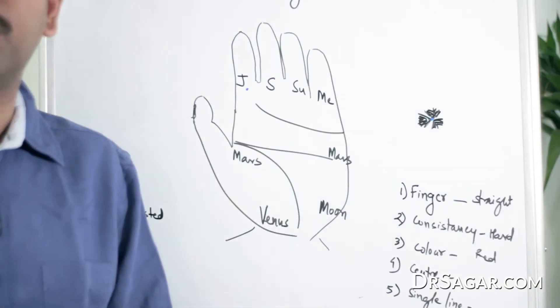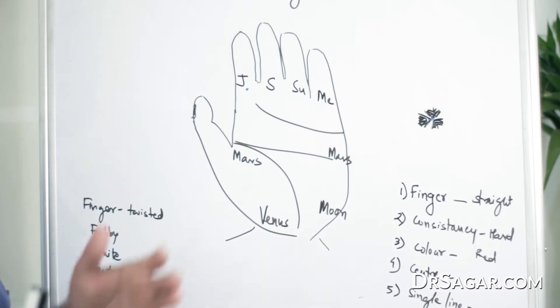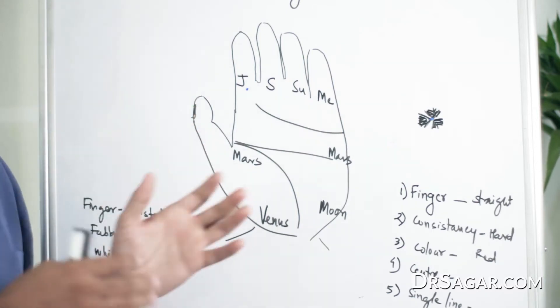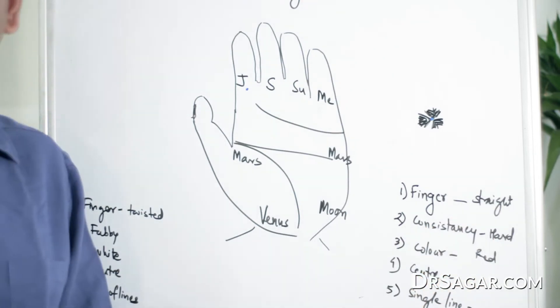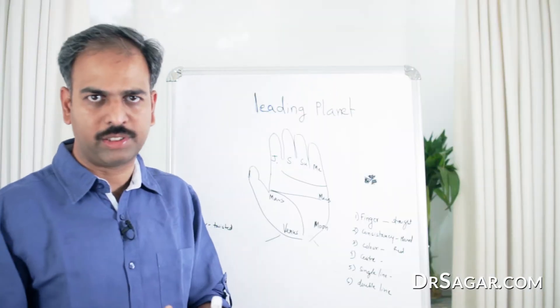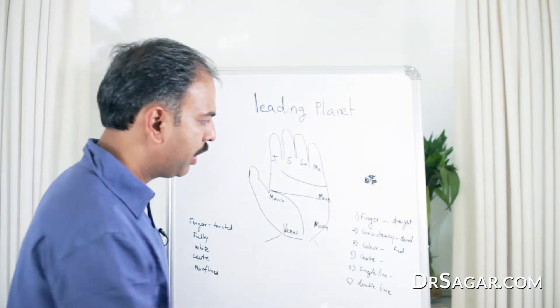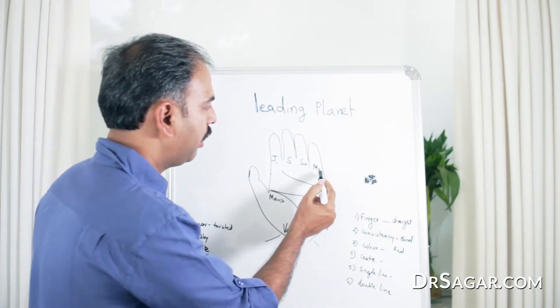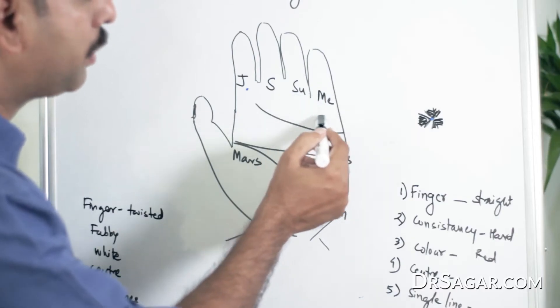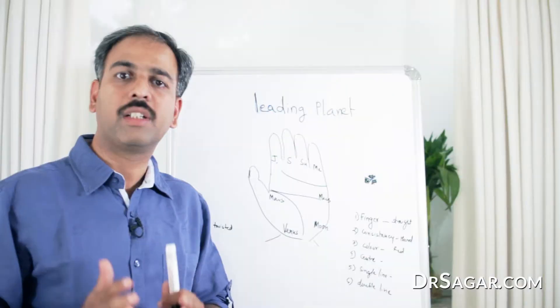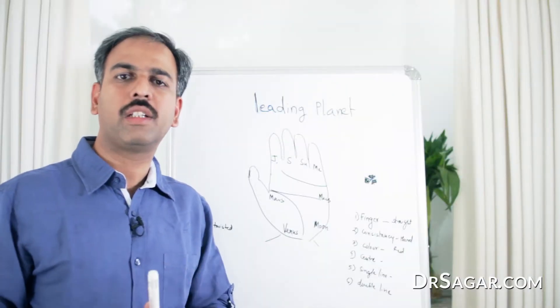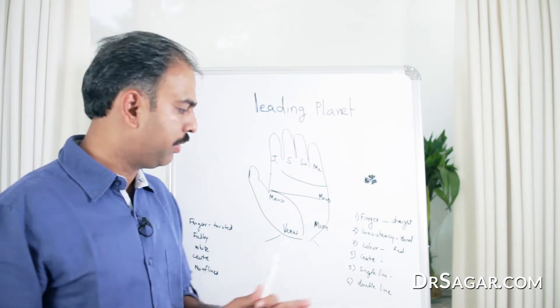Now, I will show you how to identify the Leading Planet or Main Planet. First of all, the finger of that planet should be erect, very straight. It should not be tilted on one side or the other side. Then, the area where the planet is present should be hard in consistency. The color should be bright red or red.